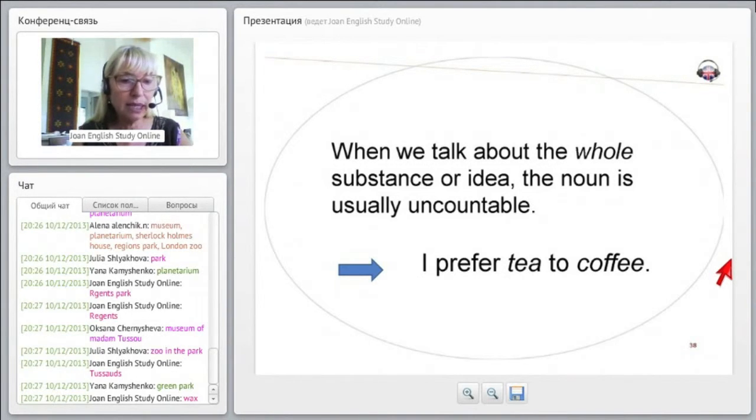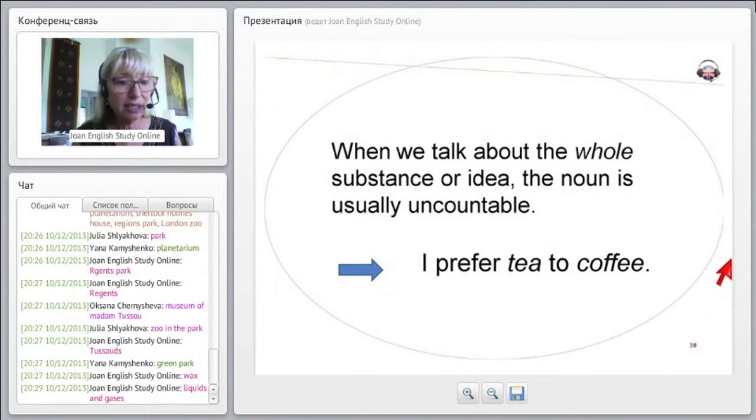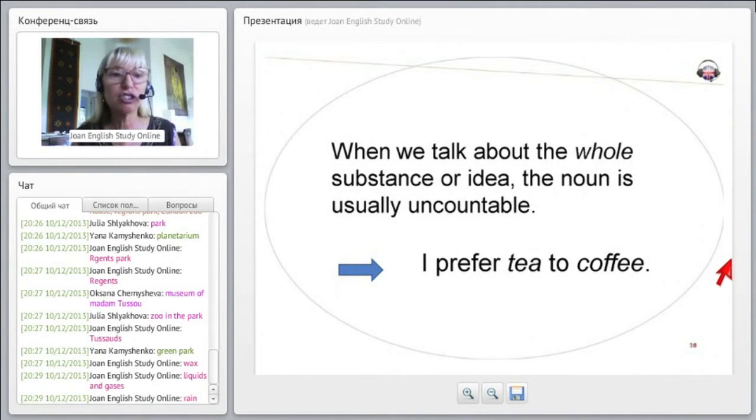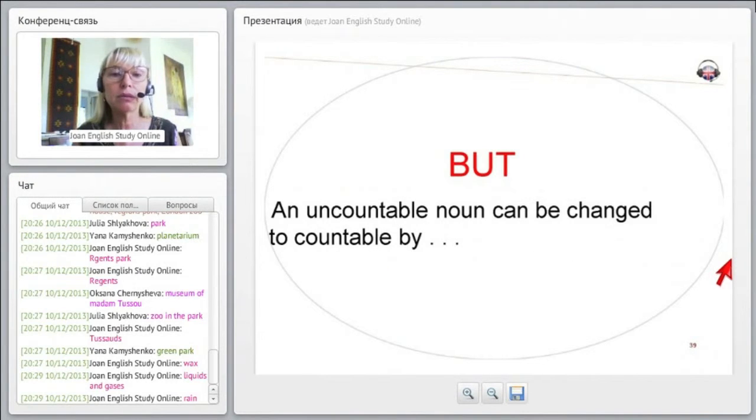Okay, I'll write that down - liquids and gases. So that makes it a lot easier because how do you count a liquid? And this would also be rain as well. Any kind of liquid: milk, juice, tea, coffee, water, Coca-Cola, any liquid.